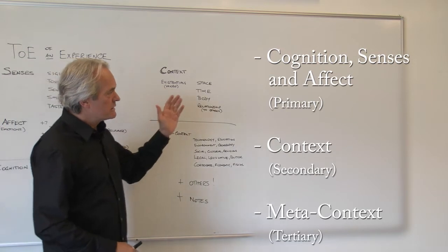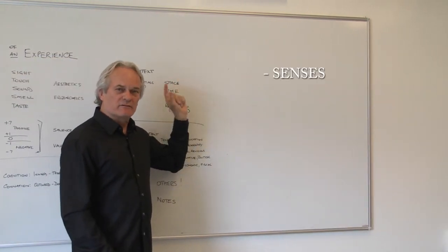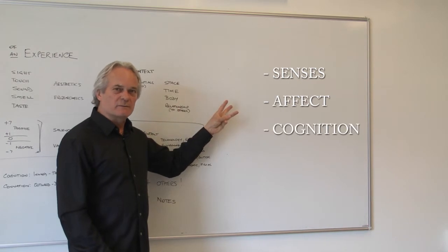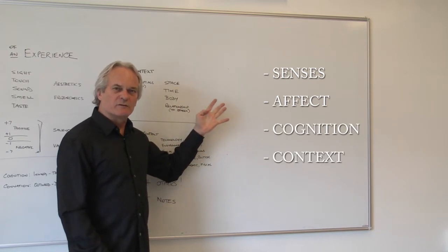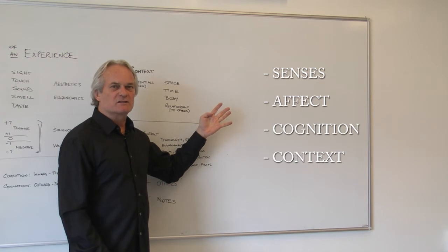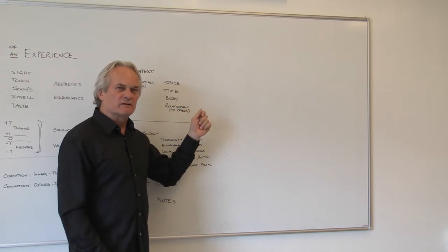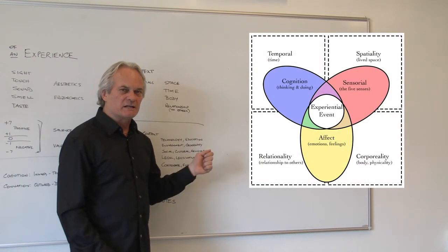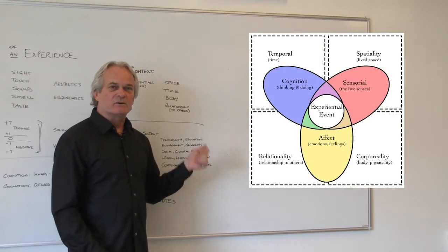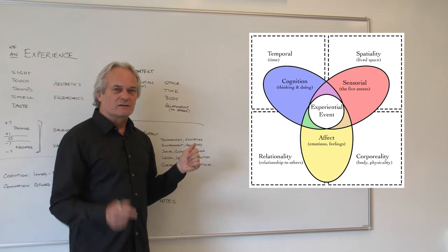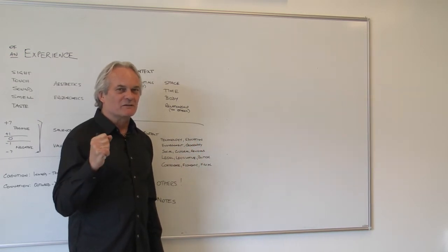So as long as we realise that in any experience we have senses, affect, and cognition happening in a context, we have the framework to begin to understand the experience in a logical and sequential way. We can make sure that if we're studying an experience, we don't miss anything — we have that checklist. Go out and I hope you really enjoy your experiences of research and do it well. Thank you.